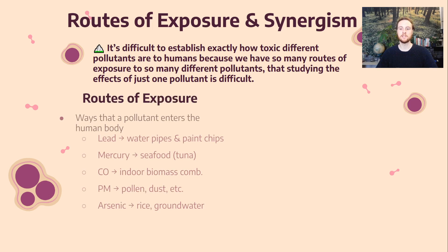Here are some examples of routes of exposure — the basic way that the body is exposed to the pollutant or toxicant in question. Lead can enter the human body through water pipes made of lead and through paint chips. Lead was used in paint for a long time, and when older homes have paint chips that fall on the ground, children put them in their mouths, or dust containing lead is inhaled. Mercury can enter seafoods, especially bioaccumulating in high trophic level organisms like tuna, and when we eat that tuna in sushi, humans are exposed to mercury.